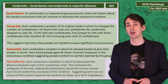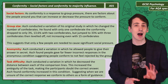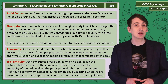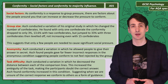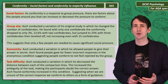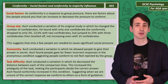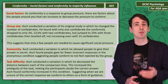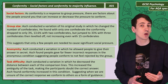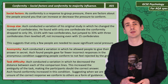For task difficulty: in this variation, Asch reduced the differences between each of the comparison lines, making it a little bit more difficult to see what the correct response was. When the participants were made less sure of the correct response in this way, conformity increased.